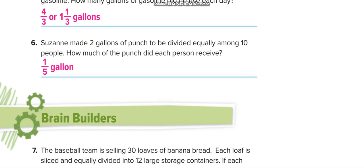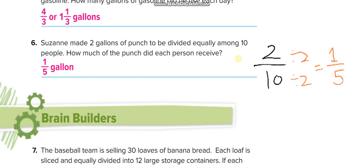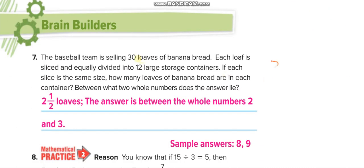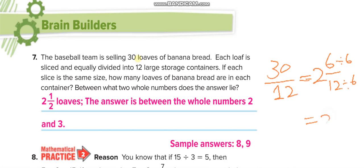Suzanne made two gallons of punch divided among ten people. Two over ten is a proper fraction, so check if it's in simplest form. Divide numerator and denominator both by two: you get one-fifth. For thirty loaves among twelve: how many twelves fit into thirty? Two, remainder six — giving 2 and six-twelfths. Simplify by dividing top and bottom by six: 2 and one-half.